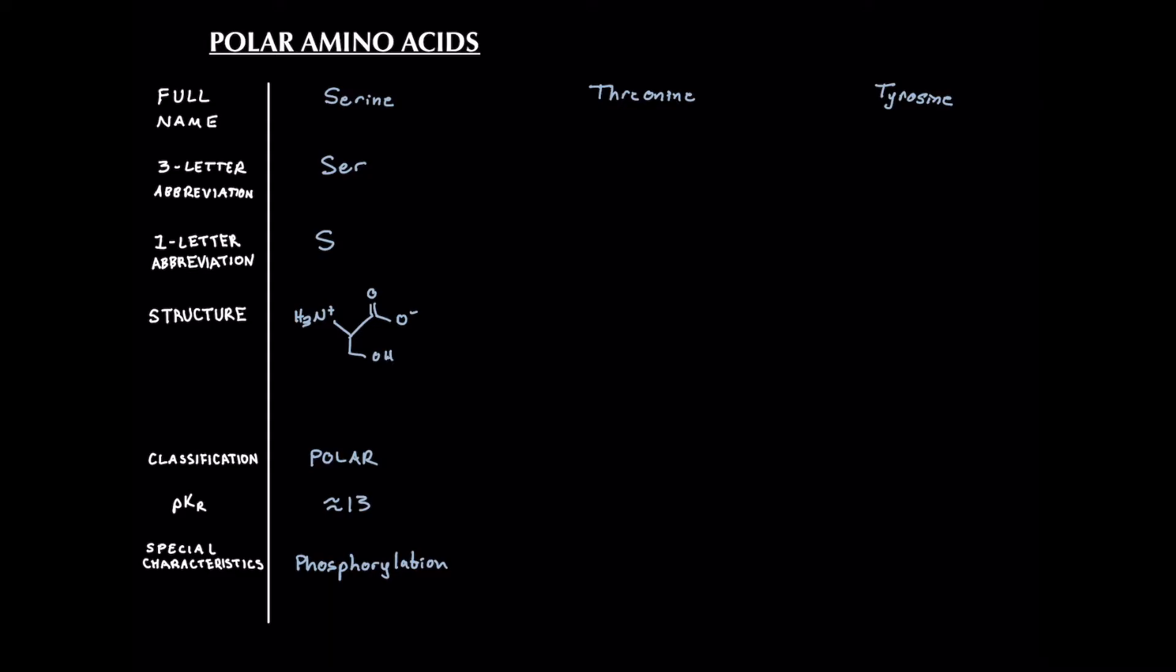Alright now let's move on to threonine. Threonine's three letter abbreviation is THR. Its one letter abbreviation is also rather intuitive, it is T. Now its structure, let's start off by drawing our N terminus and C terminus forming our backbone and then drawing our side chain. It's going to be very similar to serine. So we have one carbon, two carbons, but on that first carbon we have the hydroxyl group just like serine. So you can think of threonine as serine but with one more carbon.